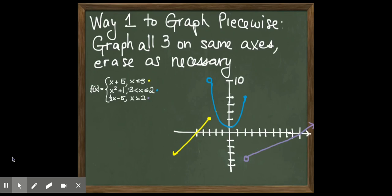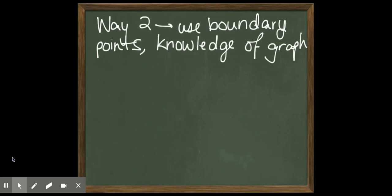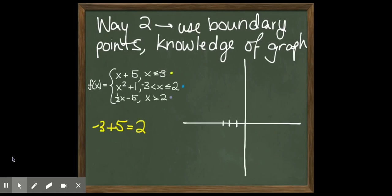Option number 2 takes less time, but you have to be really comfortable with your graphing. So the second way to graph it is to use what we call the boundary points. Those are the ones that are going to be open circle or closed circle. And then you use your knowledge of the graph to see where it comes from.